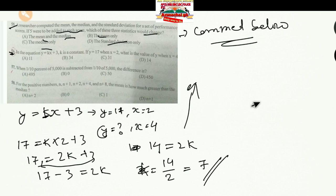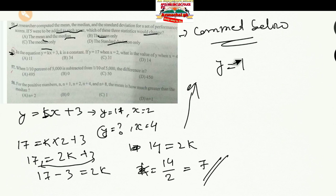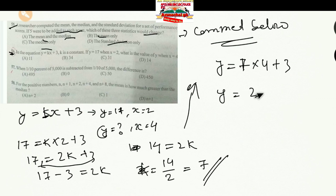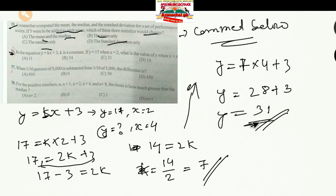Now with K = 7 and X = 4: Y = 7(4) + 3 = 28 + 3 = 31. So Y equals 31. This is the correct option.